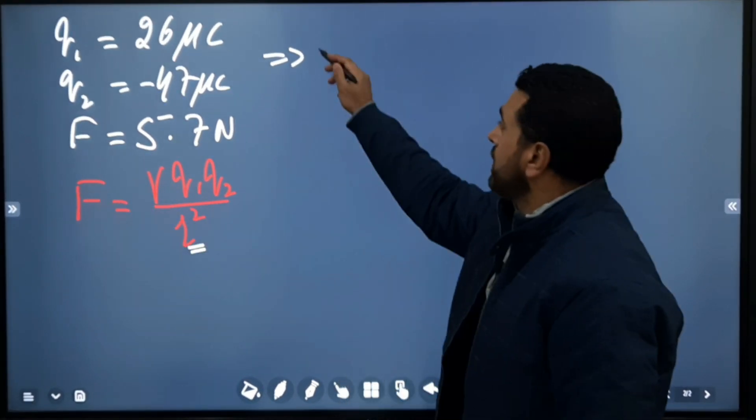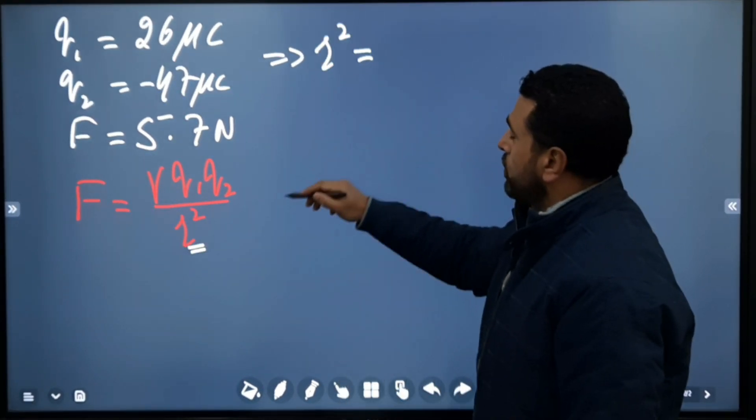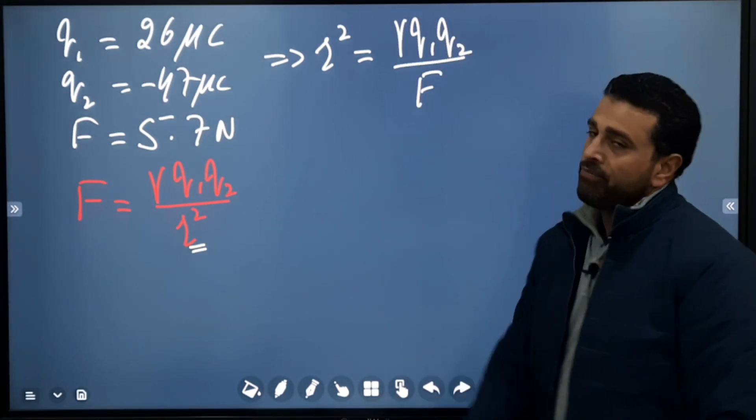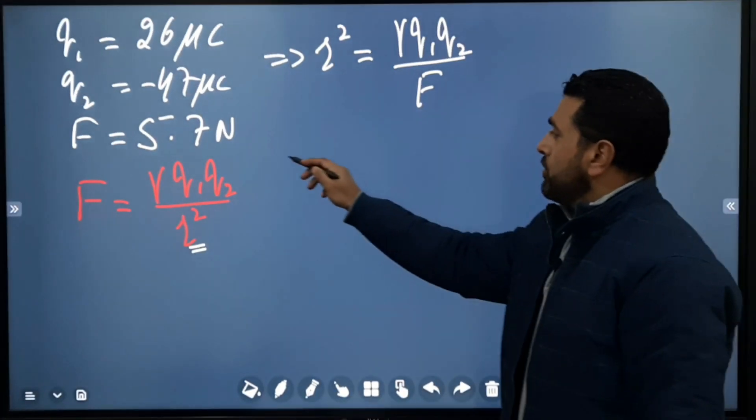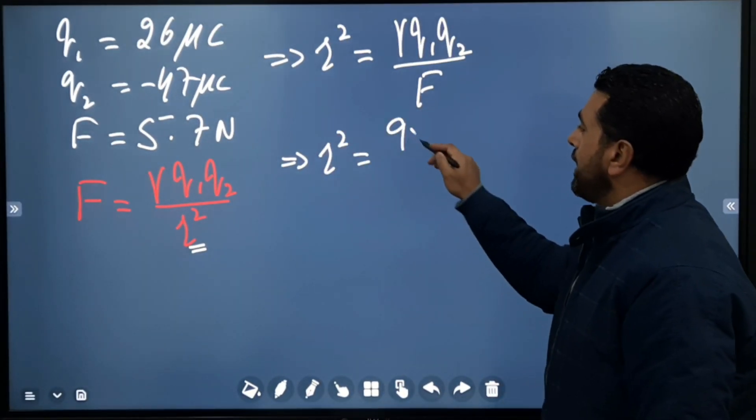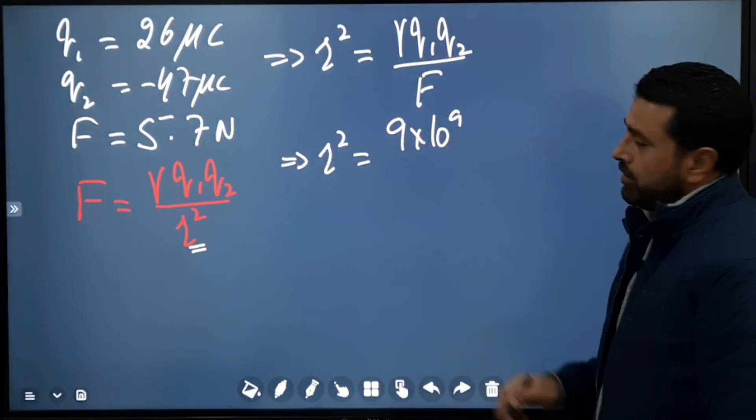r² is equal to gamma q1 q2 divided by F. Now let's substitute the values. So r² equals gamma, which is 9 × 10⁹ in SI system.